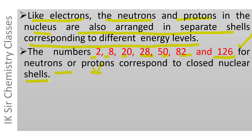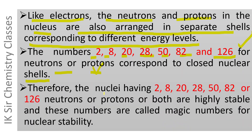In the nucleus, the neutrons and protons are arranged in separate shells. If a nucleus contains 2, 8, 20, 28, 50, 82, or 126 neutrons or protons, the nuclear shells are stable and closed. Therefore, the nuclei having these numbers of neutrons or protons or both are highly stable, and these numbers are called magic numbers for nuclear stability.